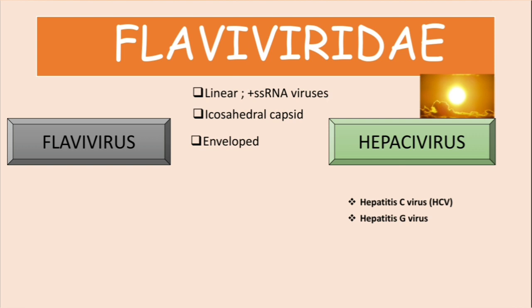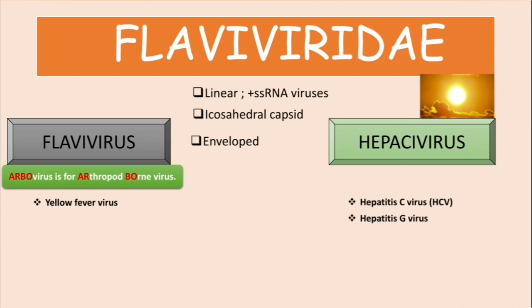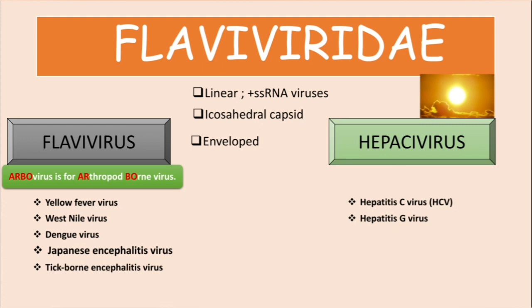Regarding the Flavivirus genus, viruses under this genus are also called arboviruses — arthropod-borne viruses — just like togaviruses. Viruses under this genus include the yellow fever virus, West Nile virus, dengue virus, Japanese encephalitis virus, tick-borne encephalitis virus, St. Louis encephalitis virus, and the Zika virus.